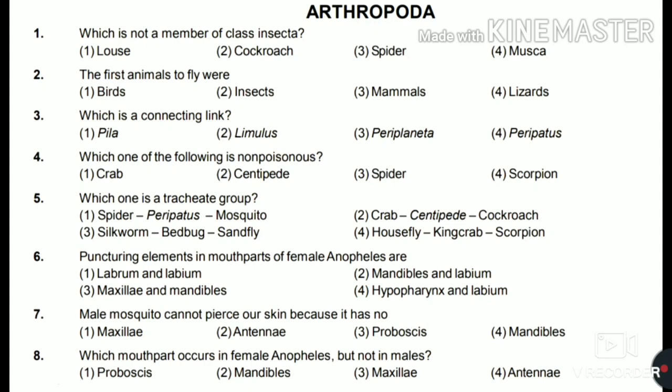Let's start with the questions. First: which is not a member of class Insecta — louse, cockroach, spider, or Musca? The answer is spider, as it belongs to class Arachnida. Second: the first animals to fly were birds, insects, mammals, or lizards? The answer is insects. Third: which is a connecting link — Pila, Limulus, Periplaneta, or Peripatus? The answer is Peripatus.